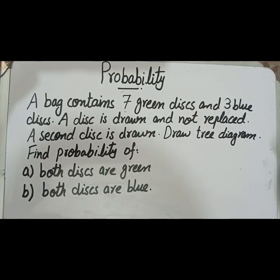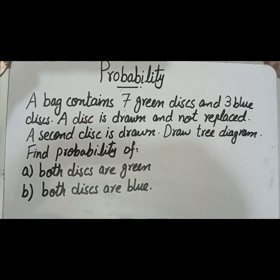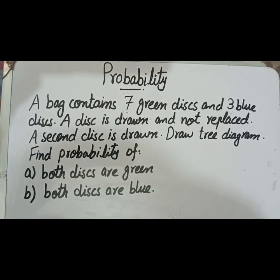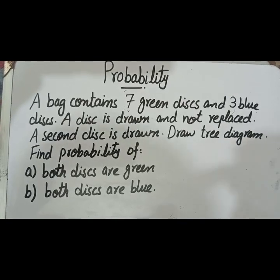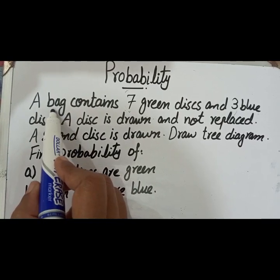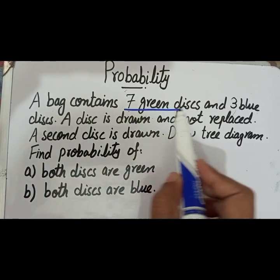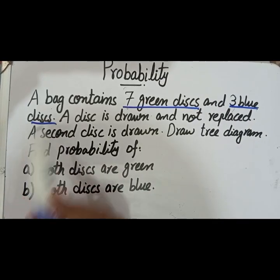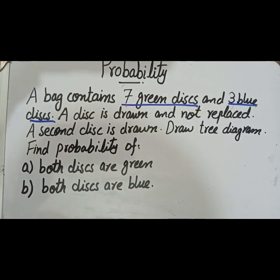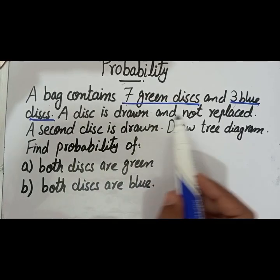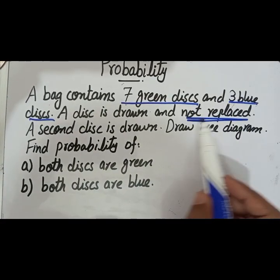Today's question is related to probability and tree diagrams. A bag contains seven green disks and three blue disks, meaning there are two types of disks: green and blue. A disk is drawn and not replaced.